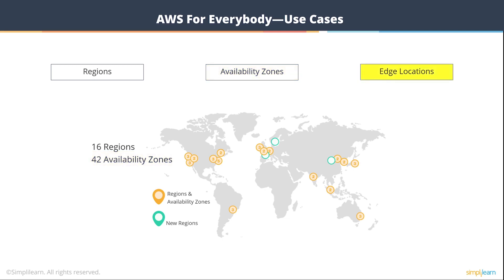AWS also has something called edge locations, which are used for content delivery — part of the content delivery network, where you can deliver your content with the lowest possible latency throughout major cities and all over the world.